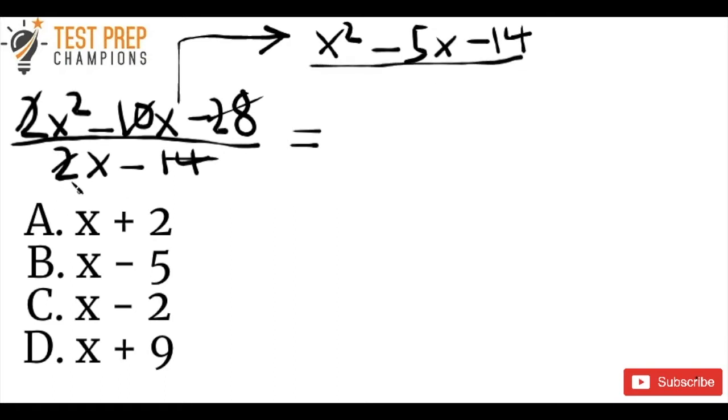And down here we divide 2x by 2. You just get x minus 14. Divide that by 2, we get minus 7.